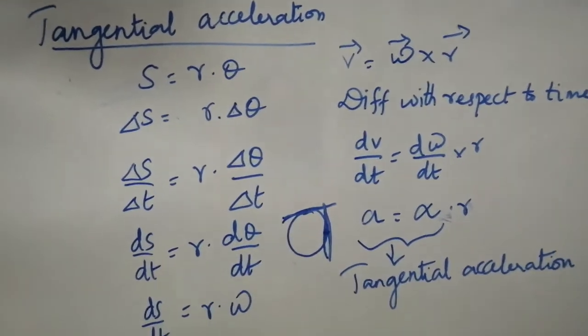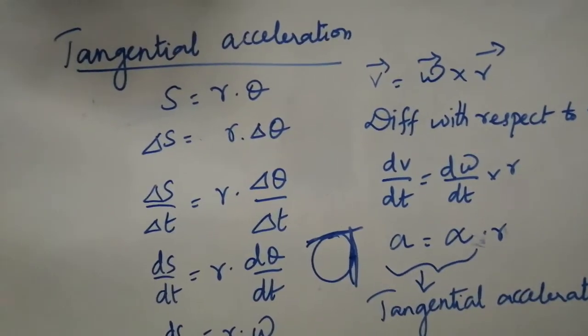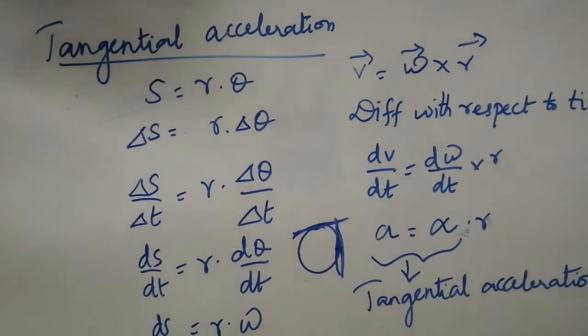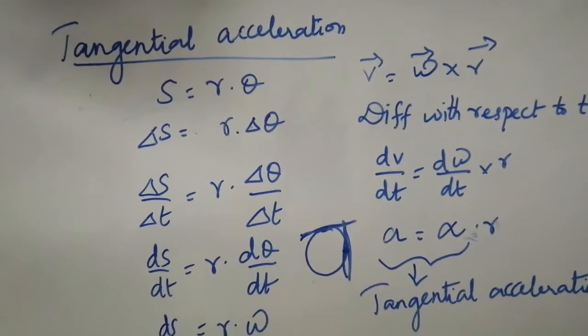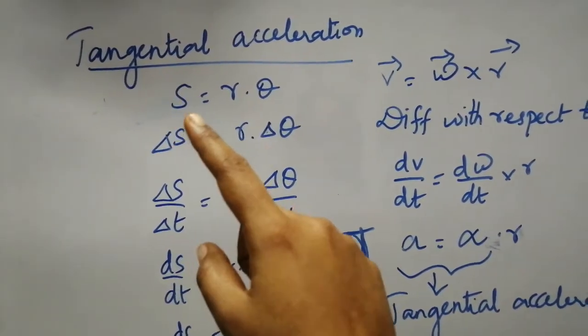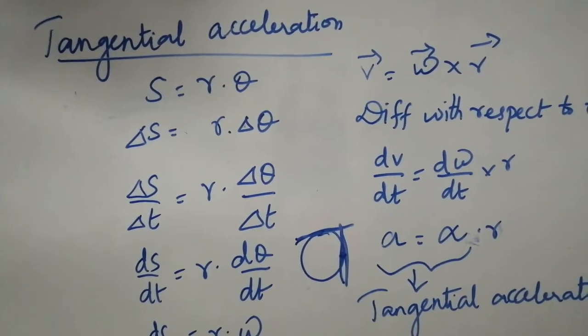So I am going to take the relationship between the normal linear thing and the circular motion. So the basic relationship is what we have got from here: S is equal to R into theta. We have discussed in the angular displacement itself.